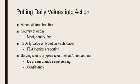Almost every food has a daily value on the label. Labels must include the product name, name and address of the manufacturer, amount of product in the package, ingredients in descending order by weight, common allergens, and the country of origin for meat, poultry, fish, fresh and frozen fruit and vegetables. Additionally, peanuts, pecans, macadamia nuts, and ginseng must be listed. The FDA monitors these labeling requirements, and the percent daily value is listed on the Nutrition Facts Label as well.